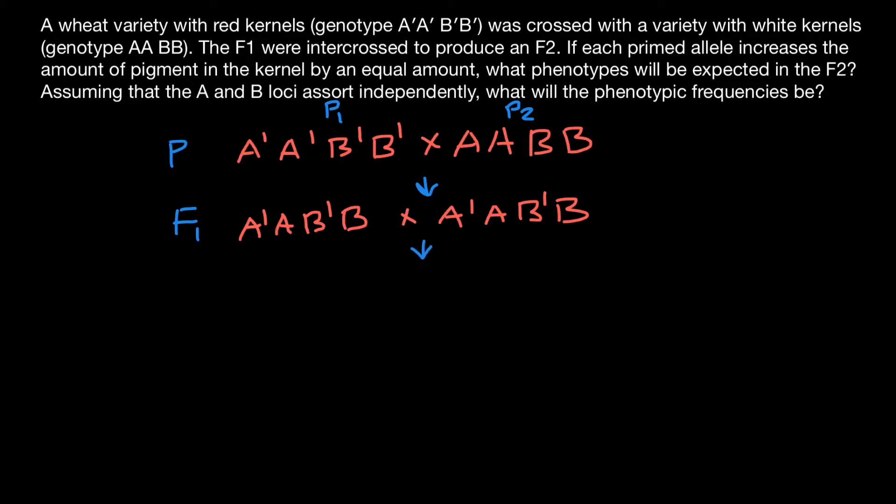And this is how we are getting F2 generation. But in F2 generation, there's going to be segregation of genotypes and phenotypes with different ratios. Let's find what phenotypes are going to be, genotypes and their ratios. Of course, one variant would be when all four alleles would be with prime. So A'A'B'B'. And only one such combination is possible.